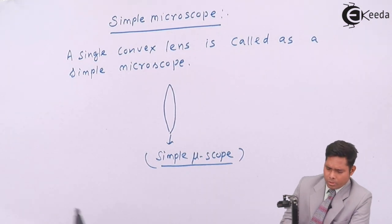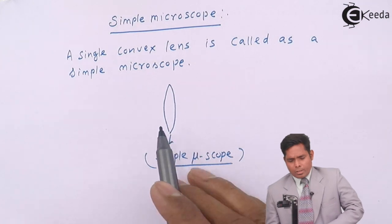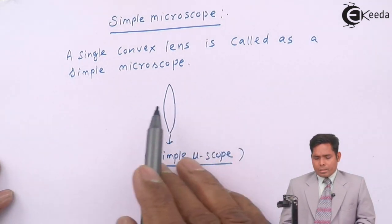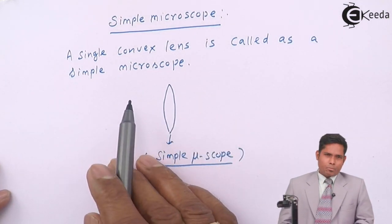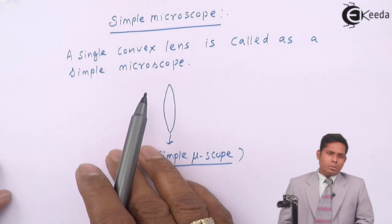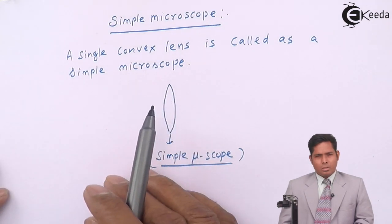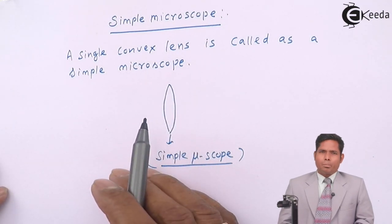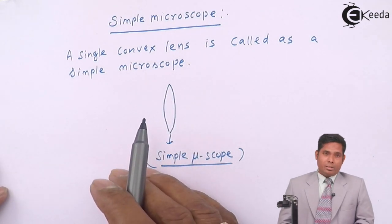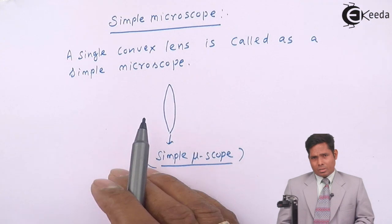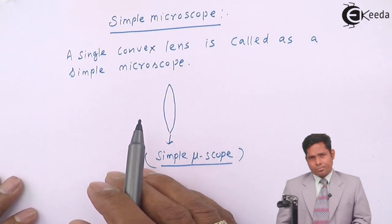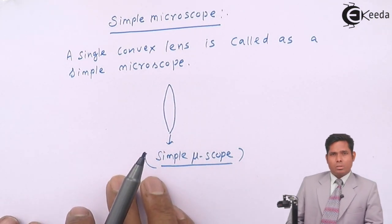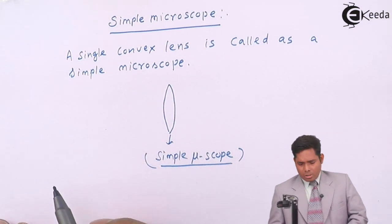In the case of a convex lens, if we place an object within the focus, then only you get a magnified image. That image is also virtual and erect.